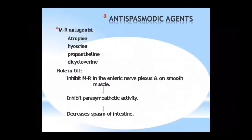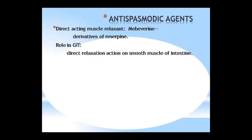The next class of drugs is anti-spasmodic agents, which are muscarinic receptor (MR) antagonists — muscle relaxant antagonists. These include atropine, hyoscine, propantheline, and dicycloverin. Their role in GIT is to inhibit enteric nerve plexuses and smooth muscles by blocking muscarinic receptors, which reduces parasympathetic activity and affects sphincters. In direct-acting muscle relaxants, we can give mebeverine, which is a derivative of reserpine, and it shows direct relaxation action on the intestinal smooth muscle.